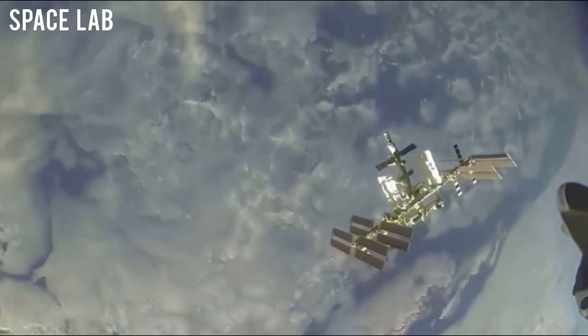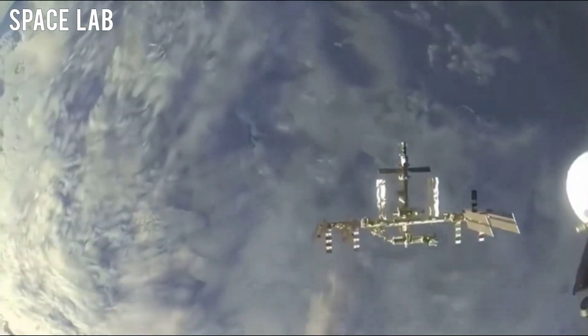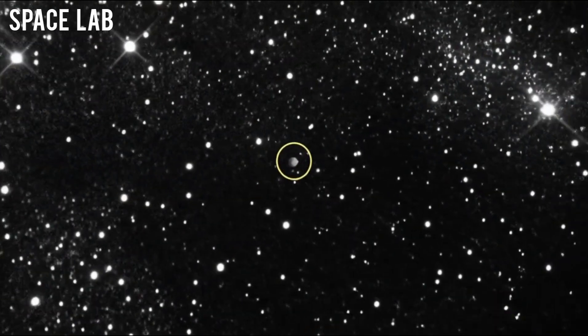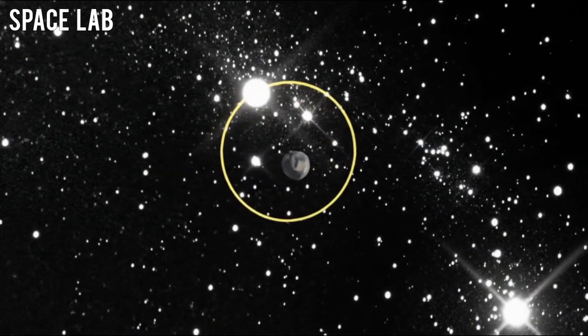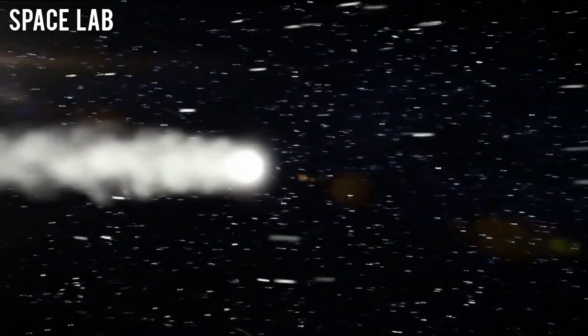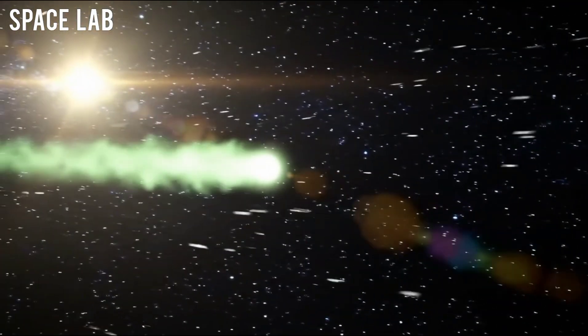31 Atlas was back, and this time, it was different. Its trajectory had changed. Slightly, but deliberately. It was no longer drifting along its predicted orbit. It was steering.